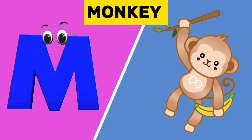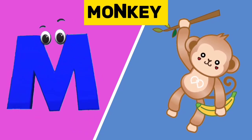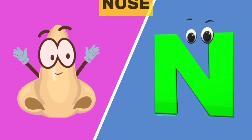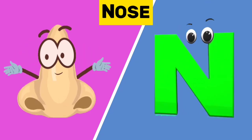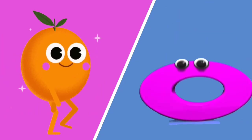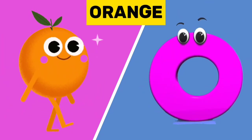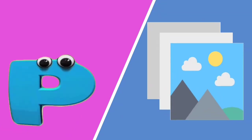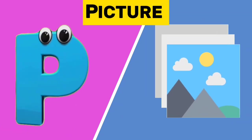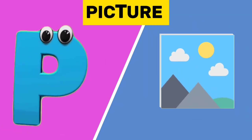M is for monkey. M, m, monkey. N is for nose. N, n, nose. O is for orange. O, o, orange. P is for picture. P, p, picture.